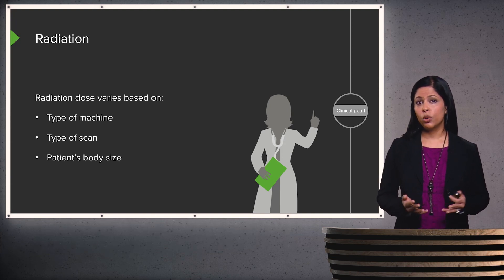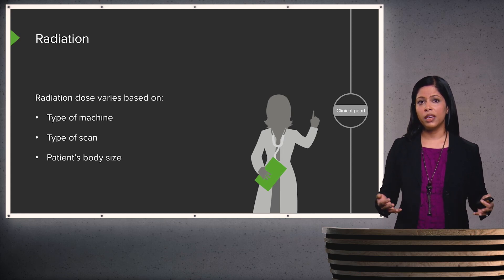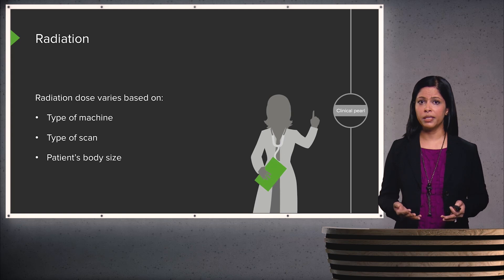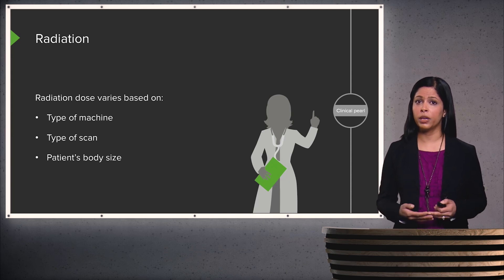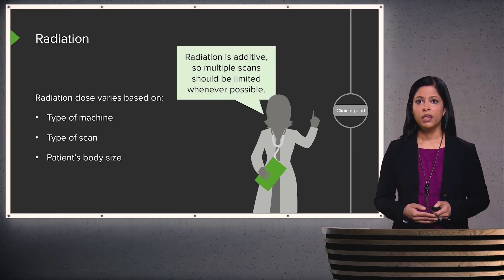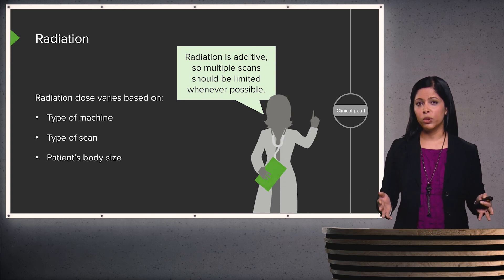Some older machines actually administer more radiation than newer machines. Head CT scans will have less radiation than an abdominal CT scan because the area being scanned is smaller. Patients' body habitus can also change the amount of radiation administered — larger patients need more radiation to penetrate body tissue. It's important to remember that radiation is additive, so multiple scans should be limited whenever possible to reduce overall lifetime dose.